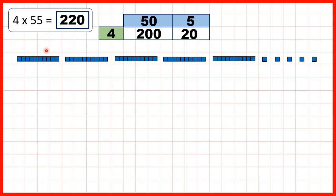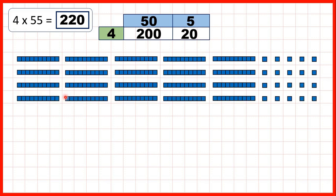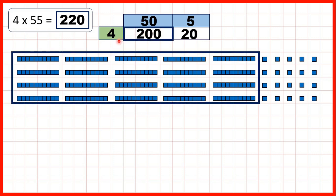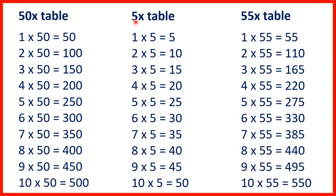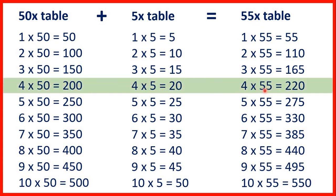Or, looking at it the other way, we can show 55 — there are 5 tens and 5 ones. Because 4 is the other number in our question, we can show 55 four times. You can see we get 200 by multiplying 4 by 50, because 20 tens means that we have 200, and we have 20 here because 4 times 5 is 20. So it's important to understand that if we know our 50 times table and our 5 times table, we can work out our 55 times table. 50 times plus 5 times equals 55 times. So because we wanted to work out 4 times 55, we could work out 4 times 50, work out 4 times 5, and then add up our answers, because 200 plus 20 is 220.